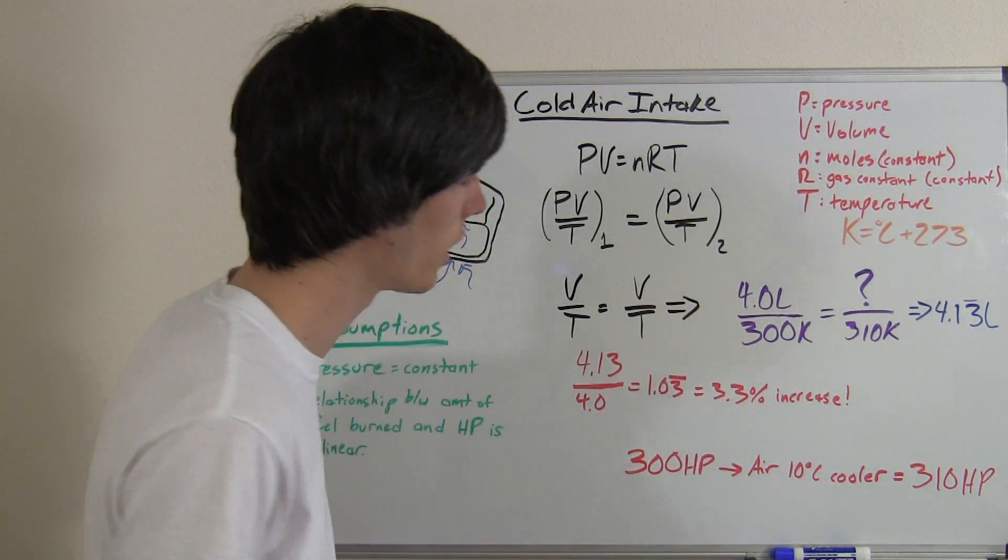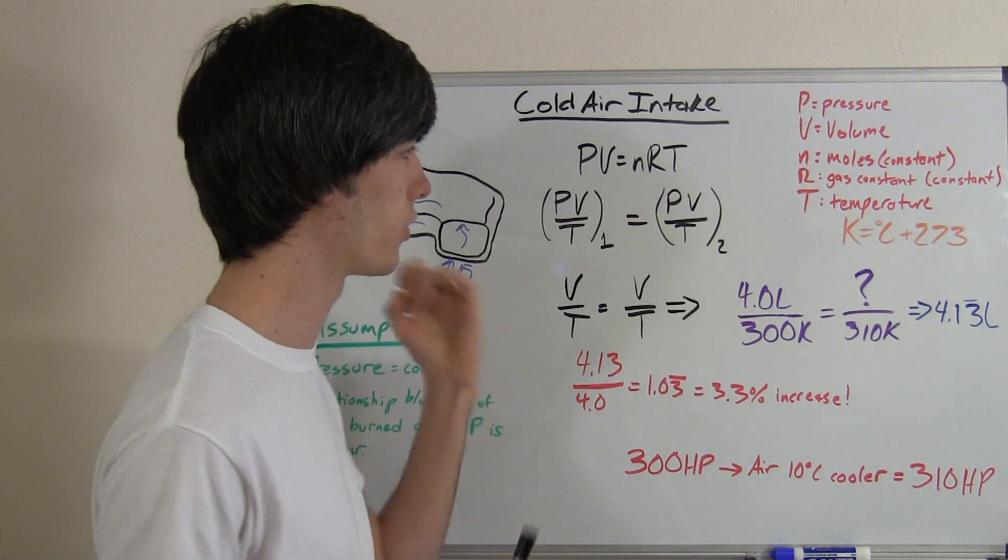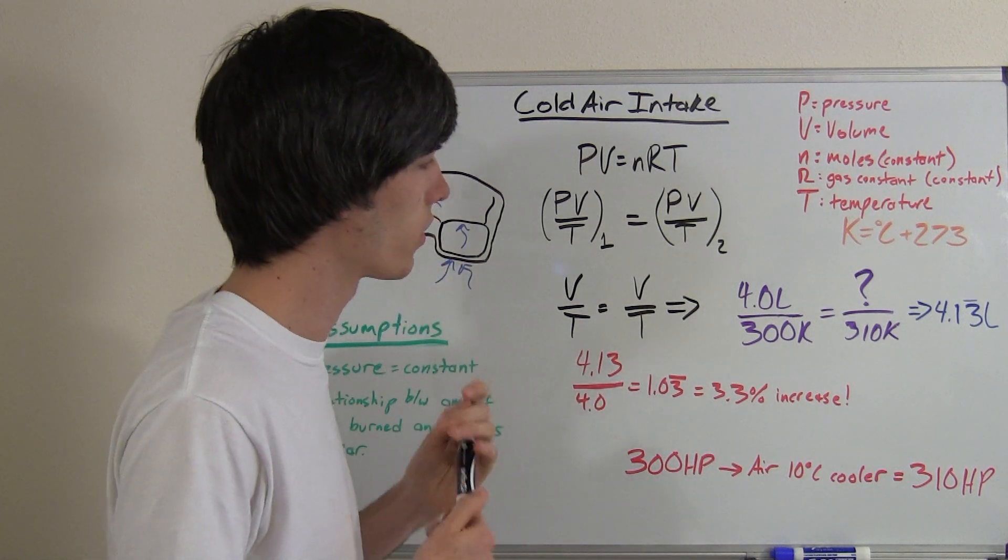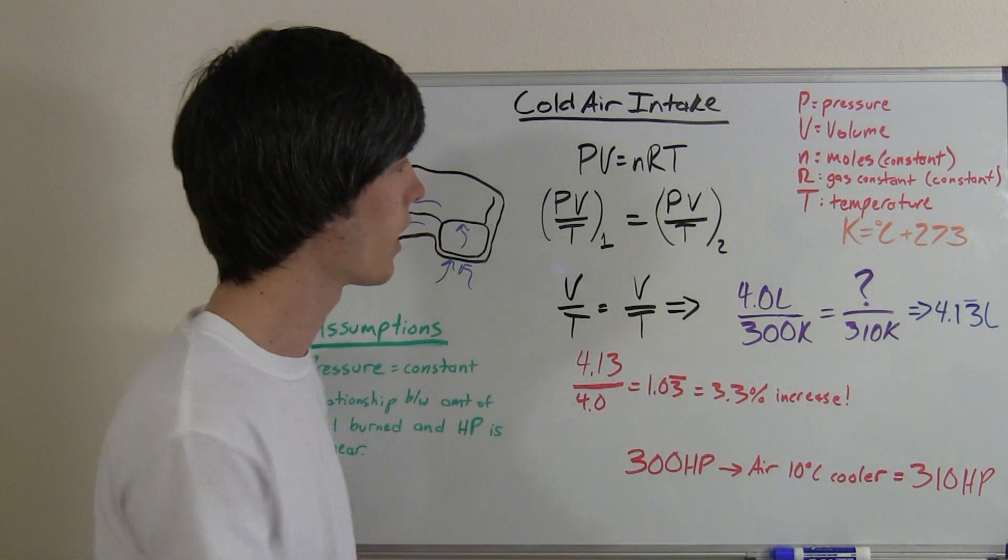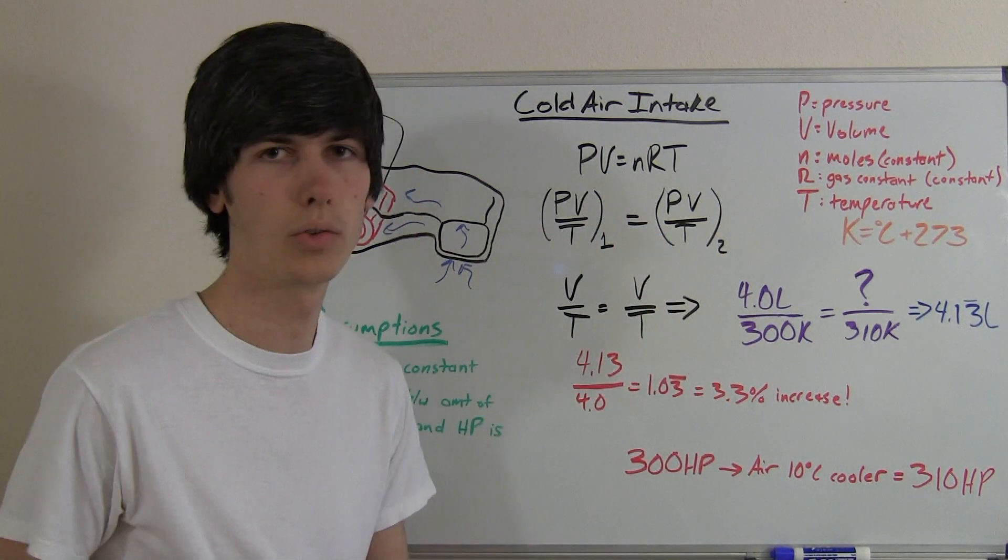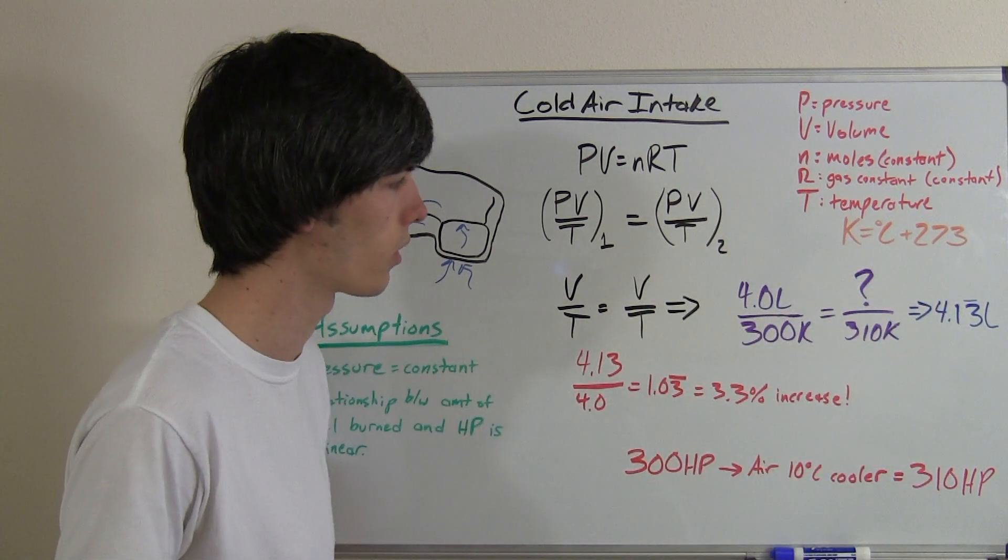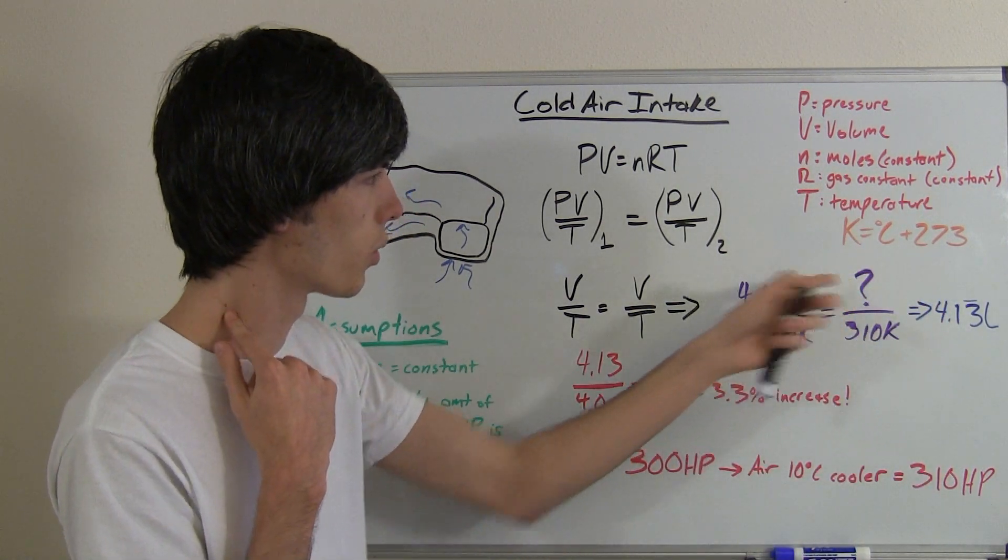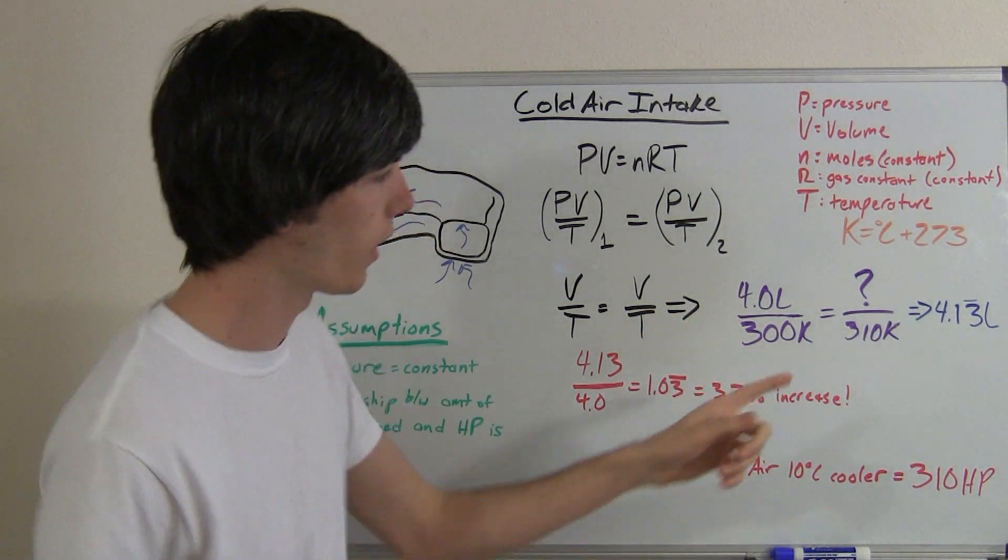So let's say we have a 4 liter engine, and it is pulling in air directly into the cylinder at 27 degrees Celsius. Now the ideal gas law requires you to use temperature in Kelvin. So that's degrees in Celsius plus 273. So 27 degrees Celsius air going into the engine, 4 liter engine.